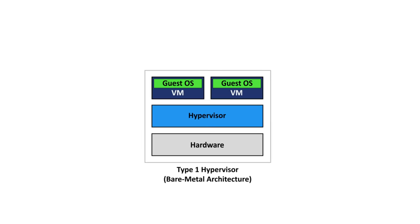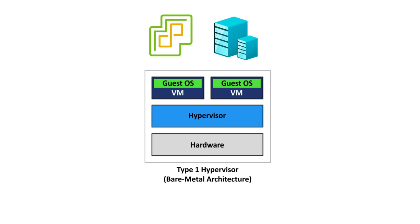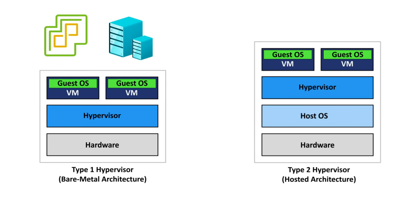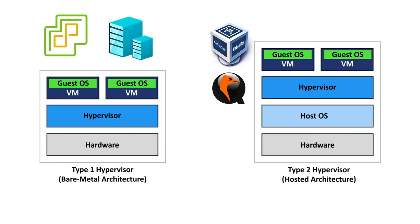Now there are two different types of hypervisors. There are type 1, or also called bare metal hypervisors, like VMware and Hyper-V, which run right on top of your hardware and distribute its resources to its so-called guests. And then there are type 2 hypervisors like VirtualBox and QEMU, which run on top of the so-called host operating system.